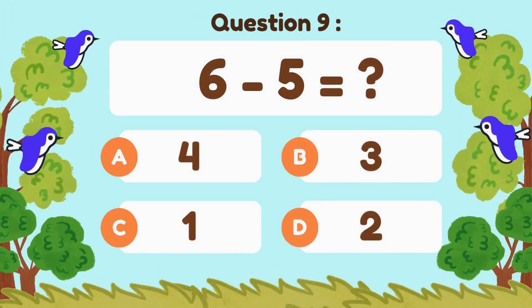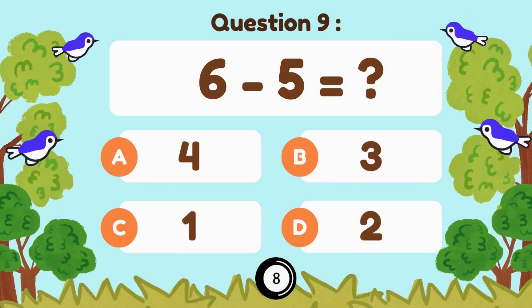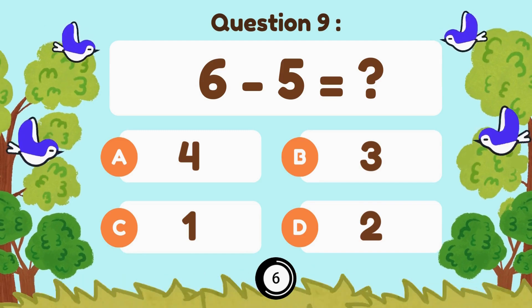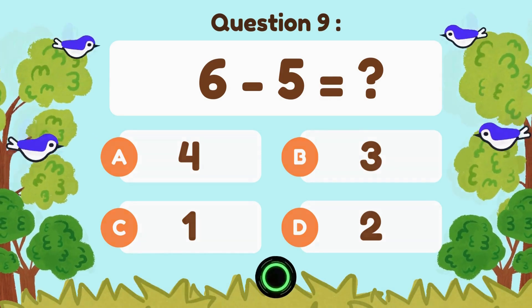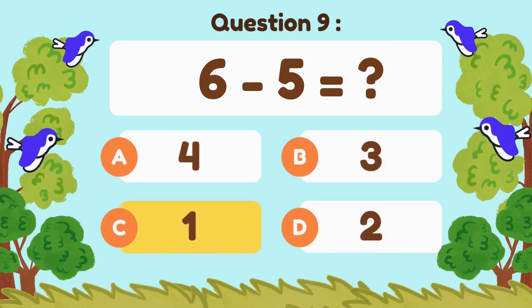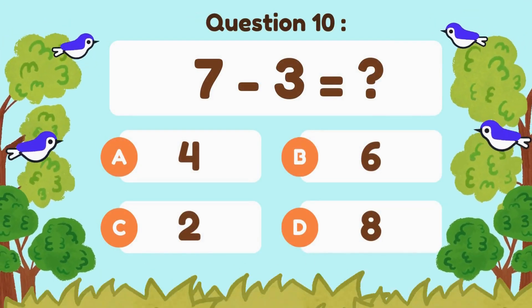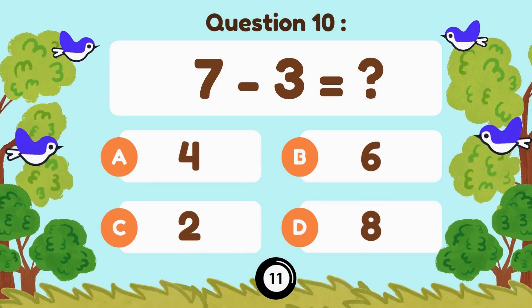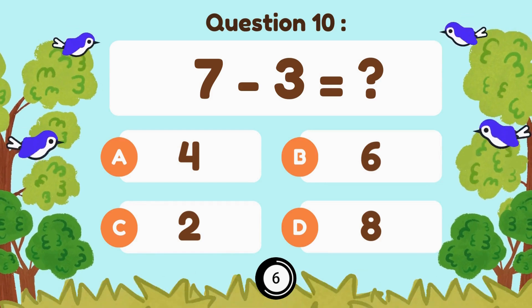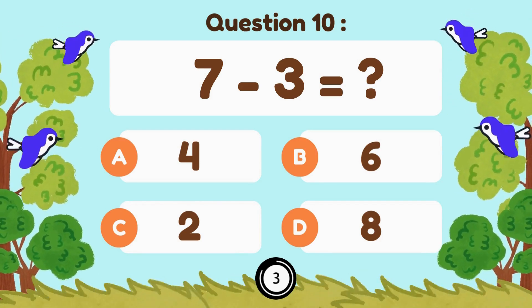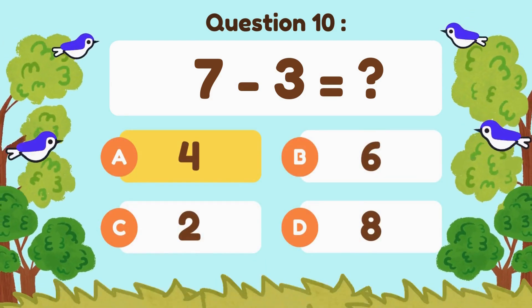6 minus 5... 6 minus 5 equals 1. 7 minus 3... 7 minus 3 equals 4.